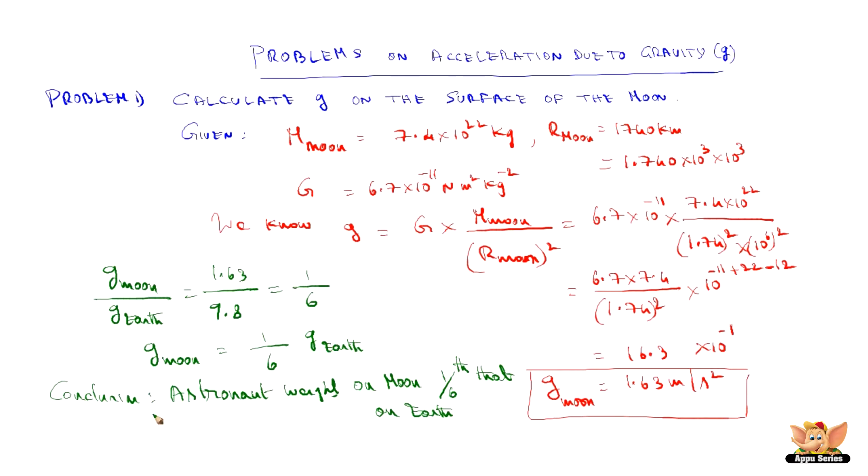Because the weight is m into g. m is a constant. Only the g varies so the weight varies. Man's mass is constant but the weight varies because g varies.